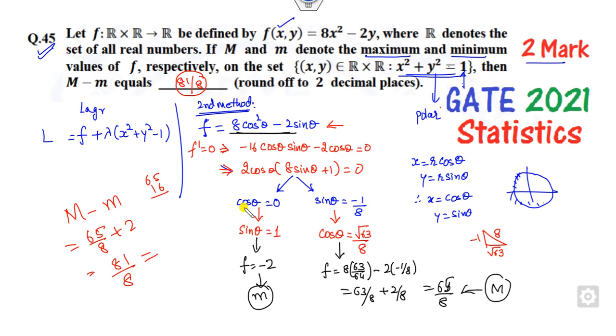So this is the way you can think about it: convert into polar form whenever there is a condition with an equality sign. Since it is an equation of a circle and r is one, you can think about this and you will get the right answer of this problem, 81 upon 8.